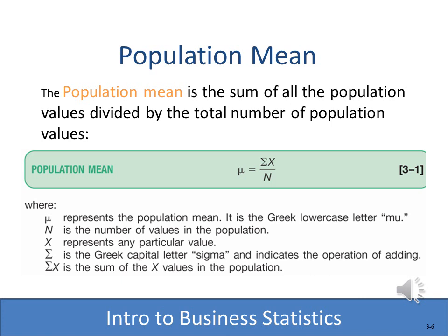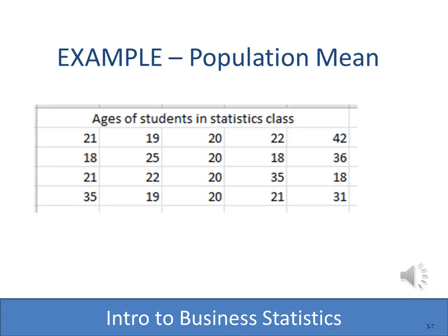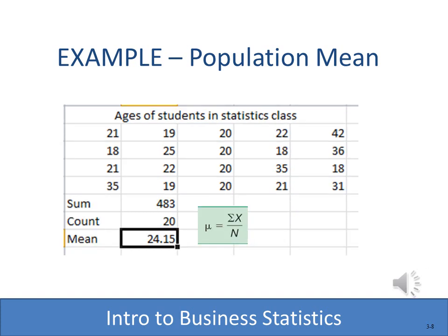We'll compute a sample mean the same way, but we will designate it differently — mu represents a population mean. Most of you are very familiar with how to compute an average or a mean, but we're going to step through it. With this example, we'll assume that we are computing a population mean — this is the age of all of the students in the statistics class, so the population would be the statistics class. After we have all the values, the first thing we do is sum them up, which comes to 483. We divide that by the count, capital N because this is a population, and we end up with a mu or population mean of 24.15.